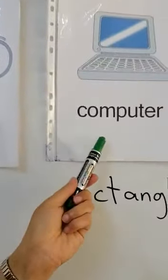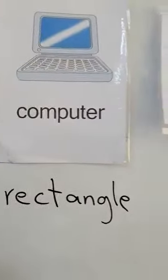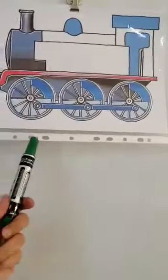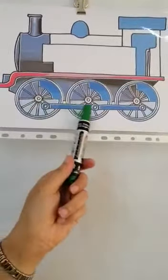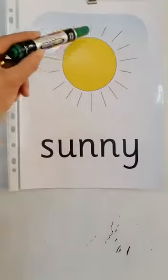This is a computer. We can see rectangle. This is a train. We can see circles and rectangle. The sun looks like circle.